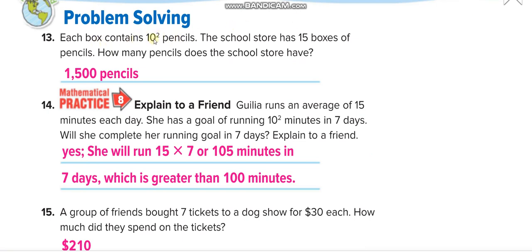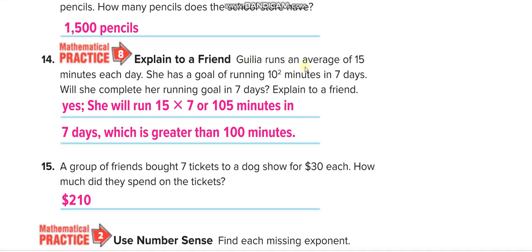Each box contains one hundred pencils. The school store has fifteen boxes, so fifteen times one hundred equals one thousand five hundred pencils. For the running problem: Hilia runs an average of fifteen minutes each day with a goal of one hundred minutes in seven days. Fifteen times seven equals one hundred five minutes, so yes, she can complete her goal since one hundred five is greater than one hundred.